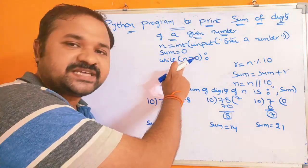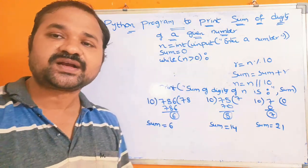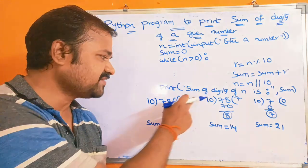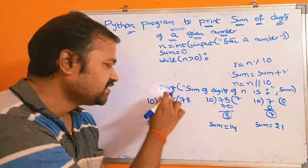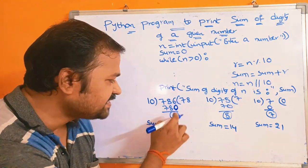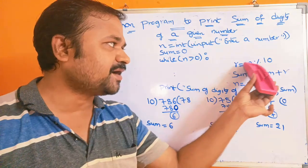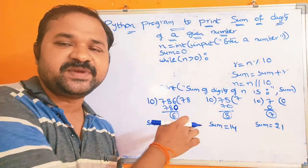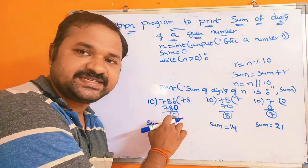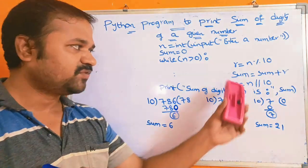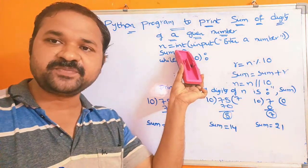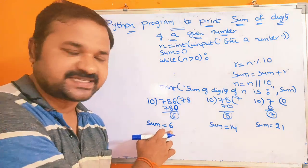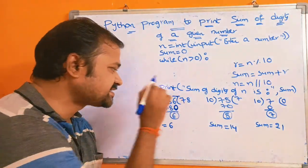Let the number be 786, so n is 786. 786 is greater than 0, so the condition is true and the body gets executed. r is equal to n modulo 10 — modulo always gives the remainder, so the remainder is 6, which is the last digit of 786. Next, sum is equal to sum plus r: the initial value of sum is 0, so 0 plus 6 equals 6. Now sum is 6.